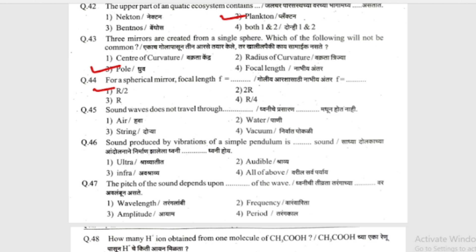Sound waves do not travel through what? (Dvani ze prasaran timba timba madhun ho nai.) Options: air (hawa), water (paani), string (dorya), or vacuum (niruwaad pokri). The answer is vacuum.